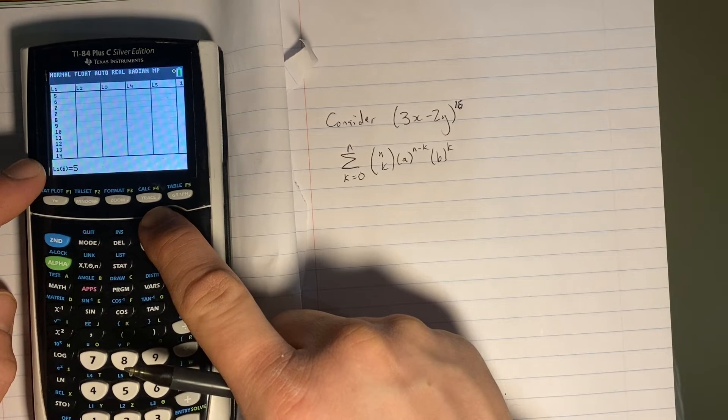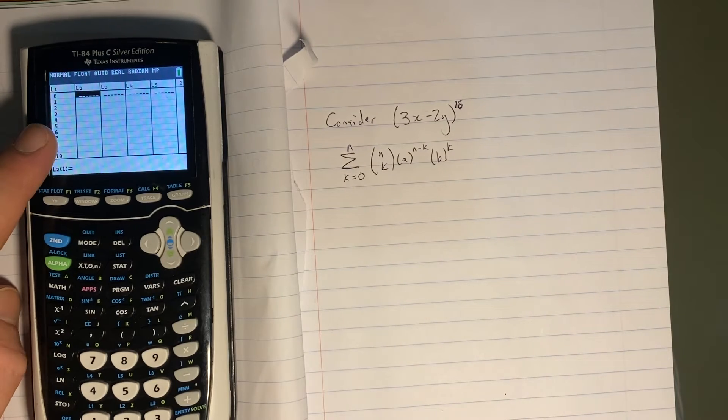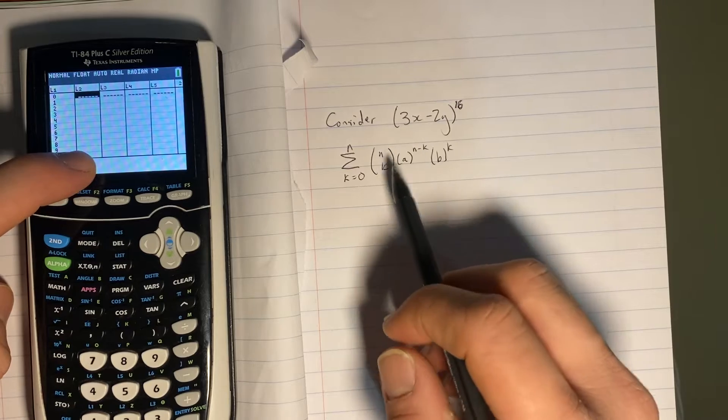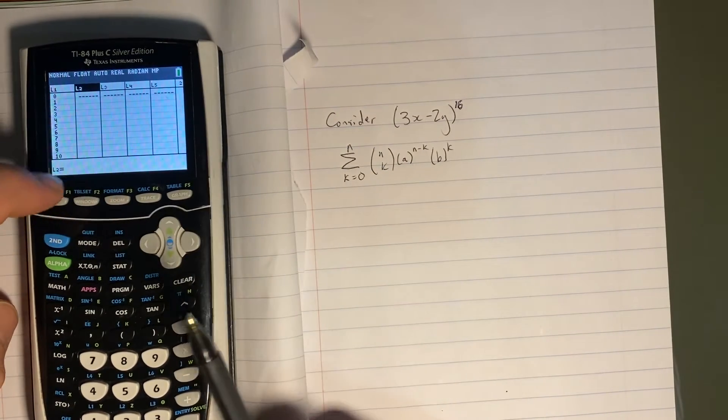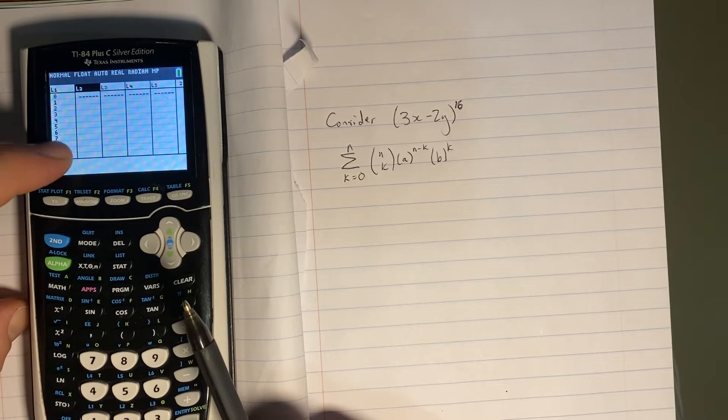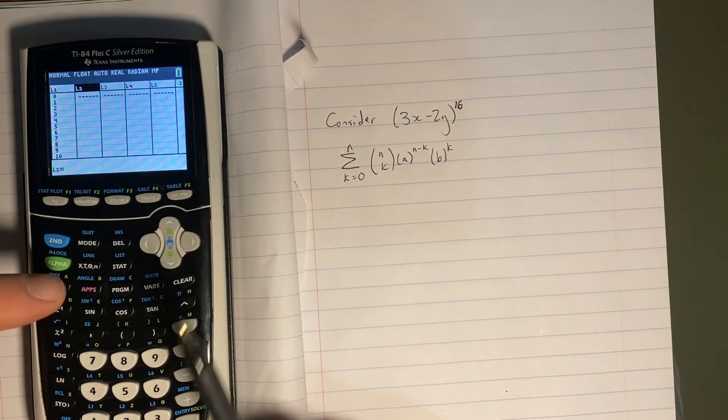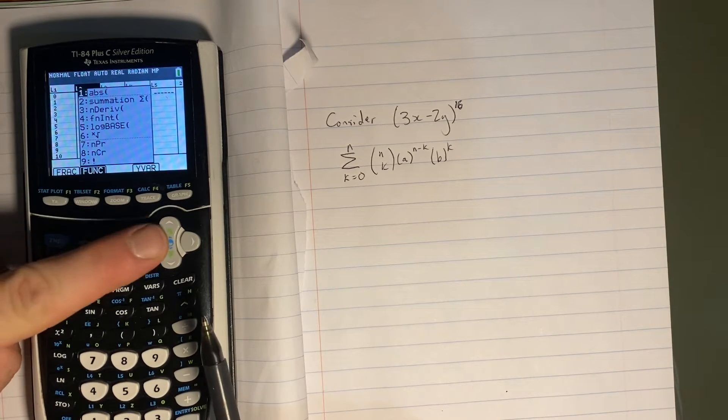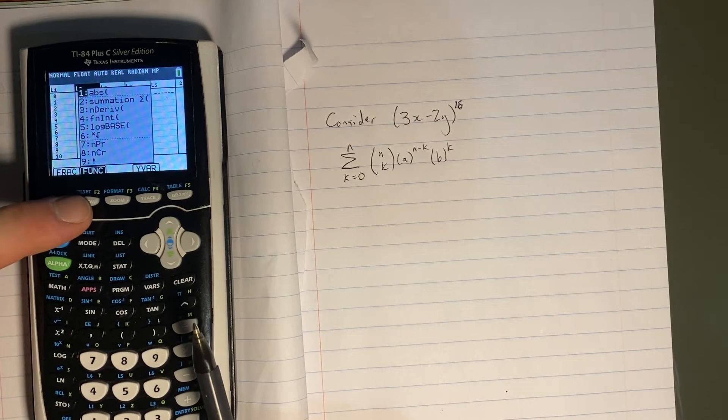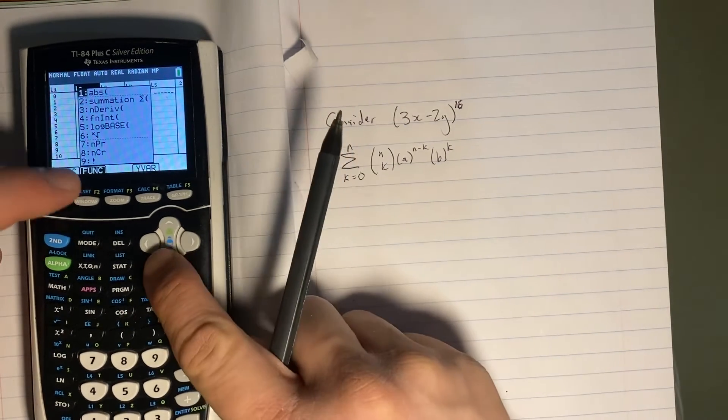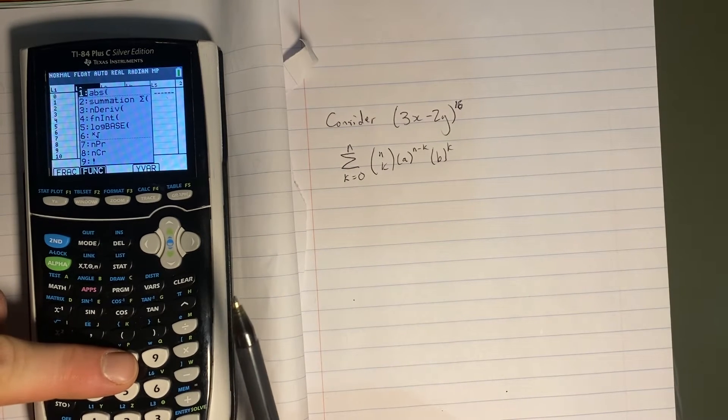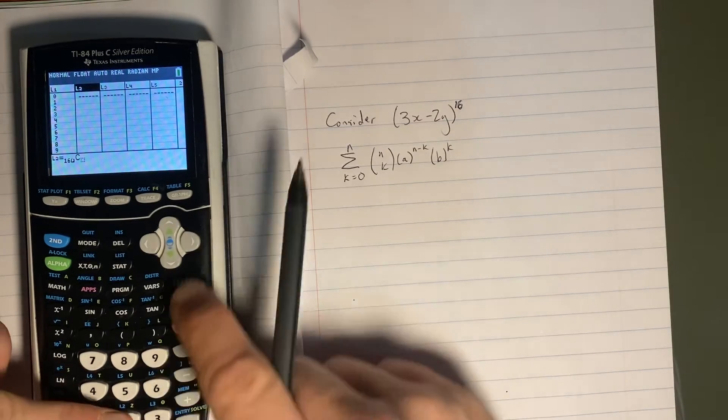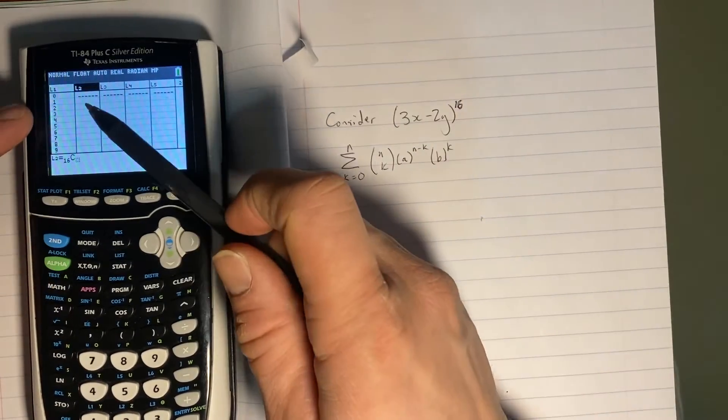So now we'll scroll over to L2. And in here, I want to put in all of the choose notation. So my choose notation is N choose K. So I'm going to go up to L2, just like I had done with L1. I'm going to hit enter so it gives me something to work with here. And I'm going to use my choose notation. So that's under alpha F2. So alpha window. And that will get me 8 for NCR. And that's the chooses. That's N choose R items. So now I want to choose from 16 and I want whatever number occurs beside it.